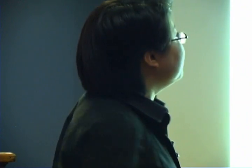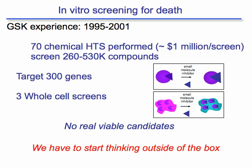So has target-based or whole-cell screening gotten us anywhere? GlaxoSmithKline published their experience from 1995 to 2001. They did 70 high-throughput chemical screens of about 260,000 to 530,000 compounds per screen, targeted 300 genes, and ran three whole-cell screens. At the end, they had no viable candidates. The person who wrote the paper — now at Merck — told me they spent 150 million dollars and came up with nothing. That's where we are.